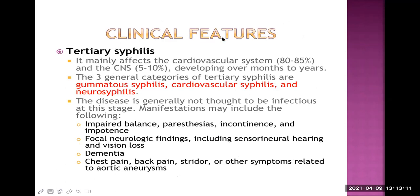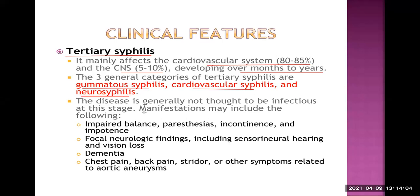Stage 3 or tertiary syphilis mainly affects the cardiovascular system in 80 to 85% of cases, and the central nervous system in 5 to 10% of cases. It develops over months to years. The three general categories of tertiary syphilis are gummatous syphilis, cardiovascular syphilis, and neurosyphilis. Gummatous syphilis involves the presence of gummas mainly in the bone — they are painful lesions characteristically worse at night.